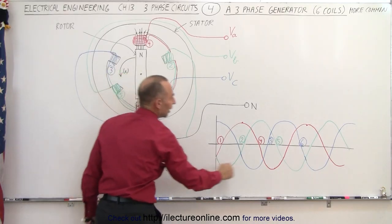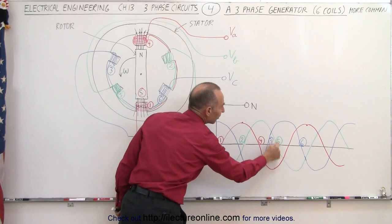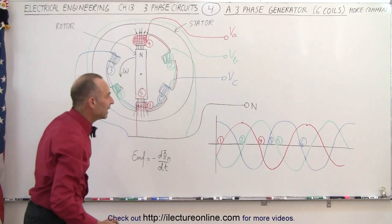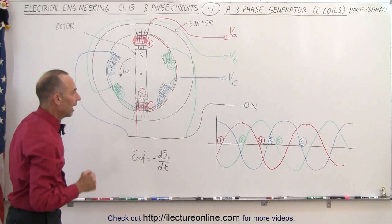When the rotor gets back over here, then we'll be at position number five, and then we have zero voltage on its way to the maximum negative value of the output voltage.